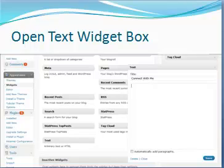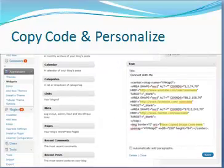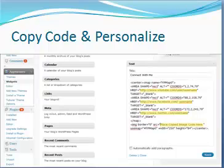Once it's where you want it, drop it into the sidebar and open the text widget by clicking on the down arrow. If you're using the Connect With Me widget that includes the 'Connect With Me' text, you can leave the title blank; otherwise, add a title that reads 'Connect With Me' or something to that effect. Copy the HTML code from the email into the box below the title. You'll need to customize the code by replacing the highlighted portions with links to your own Twitter, Facebook, and YouTube sites, along with the image URL you copied from your media library. Click Save.